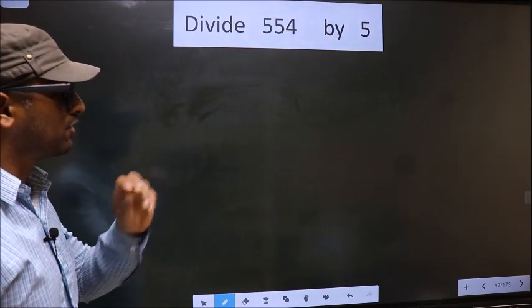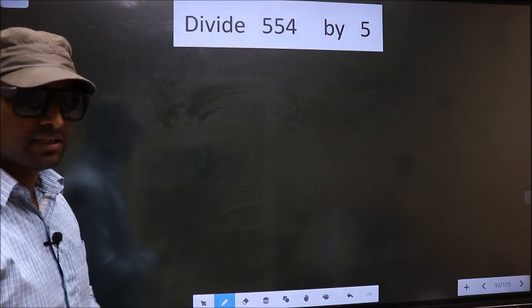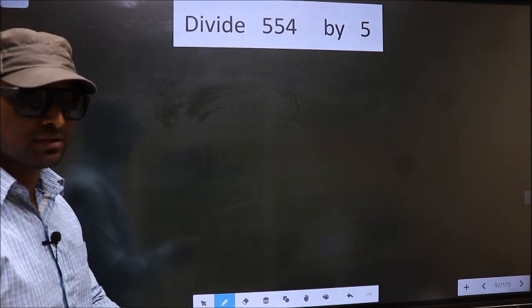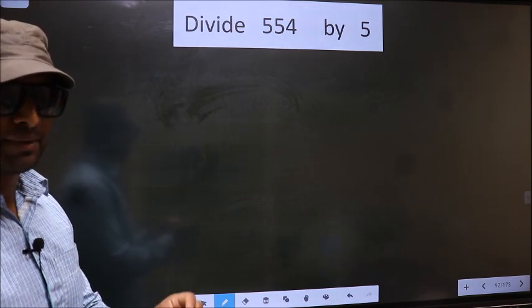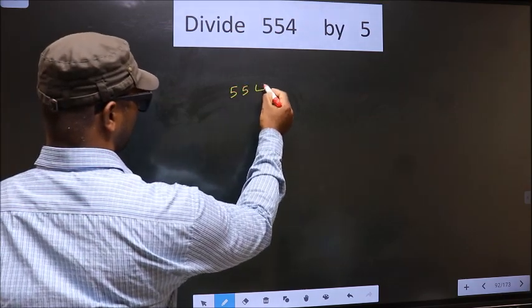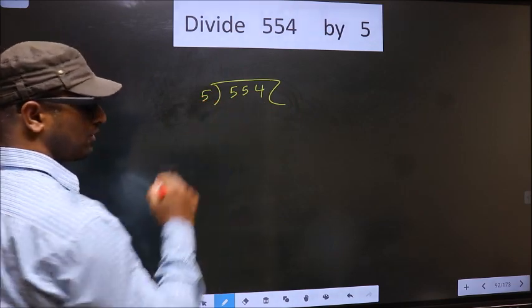Divide 554 by 5. While doing this division, many make a mistake. What is the mistake that they do? I will let you know. But before that, we should set up the problem this way. That is 554 divided by 5 here.